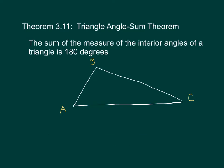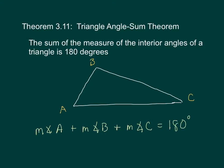The postulate from the previous slide is going to help us with the proof of Theorem 3-11, the Triangle Angle Sum Theorem, which you may already know. It says the sum of the measures of the interior angles of a triangle is 180 degrees. So given a triangle, the measure of angle A plus angle B plus angle C will add to 180 degrees.